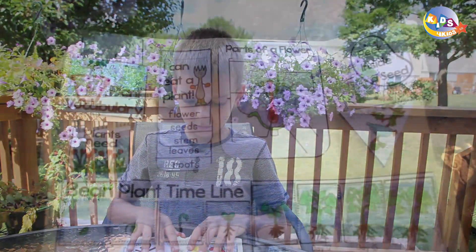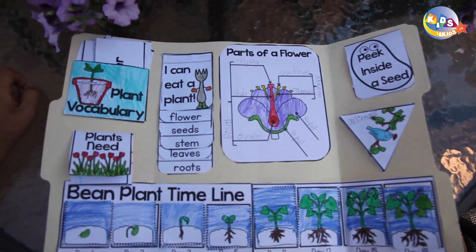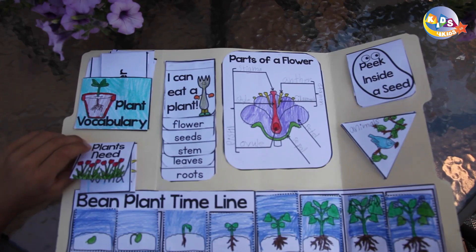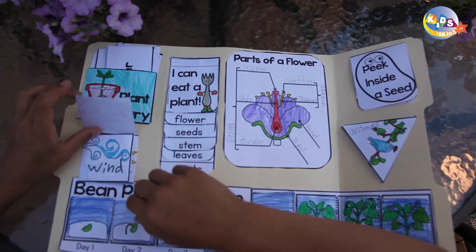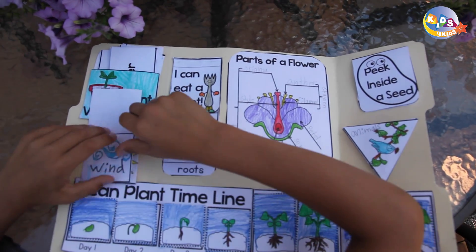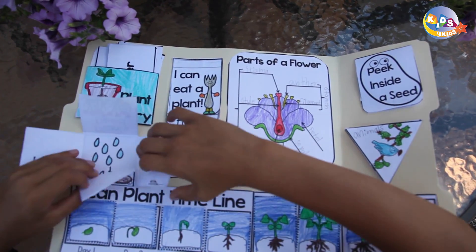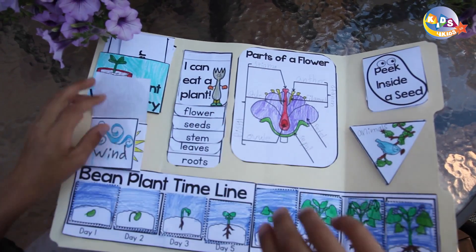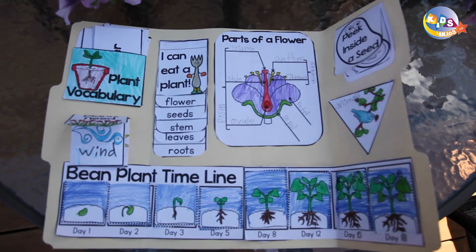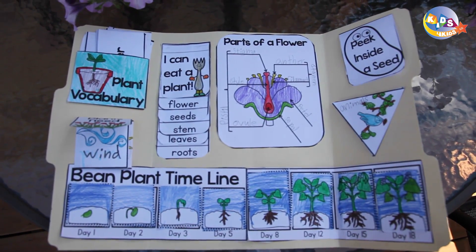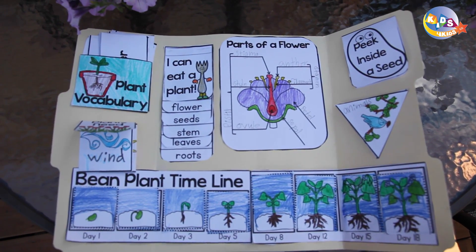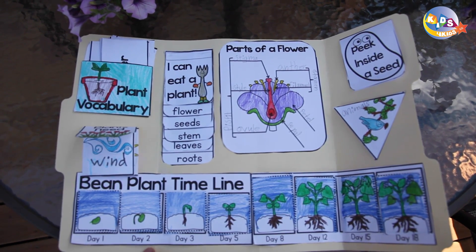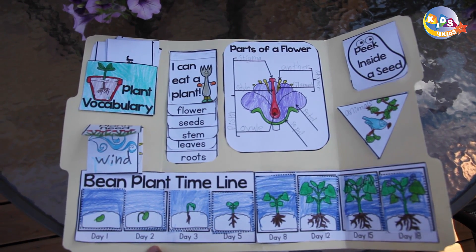Underneath the plant vocabulary is what plants need. They need soil and water. Underneath that is the bean plant timeline.